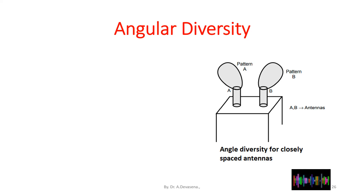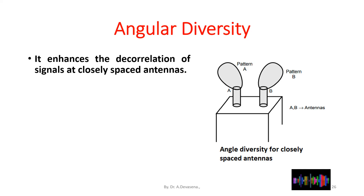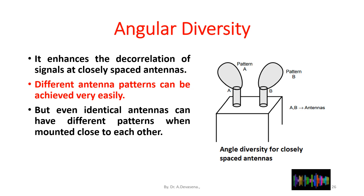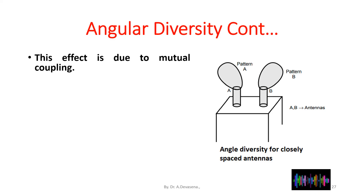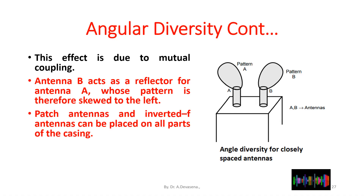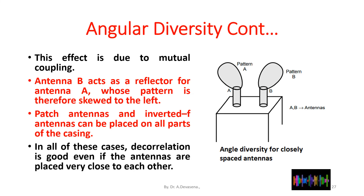The fourth type of diversity is angular diversity. Angular diversity enhances the decorrelation of signals. By using different plug-ins at closely spaced antennas, different antenna patterns can be achieved very easily. Even identical antennas can have different patterns when mounted close to each other due to mutual coupling — antenna B acts as a reflector for antenna A, whose pattern is therefore skewed to the left. Patch antennas and inverted-F antennas can be placed on all parts of the casing, and in all these cases decorrelation is good even if the antennas are placed very close to each other.